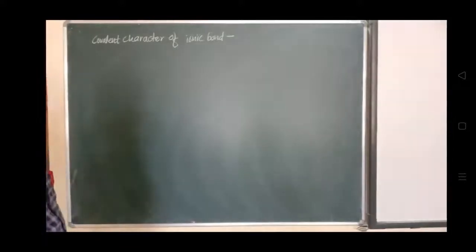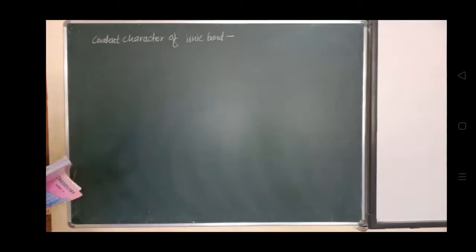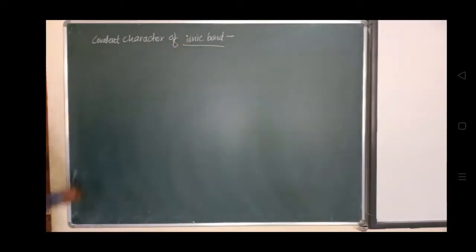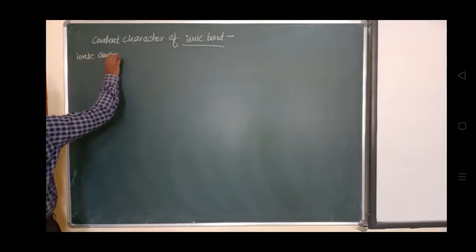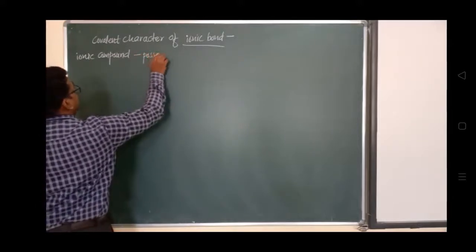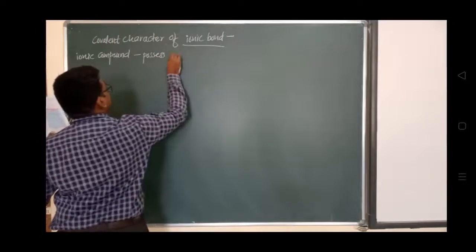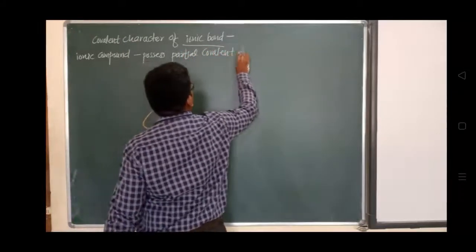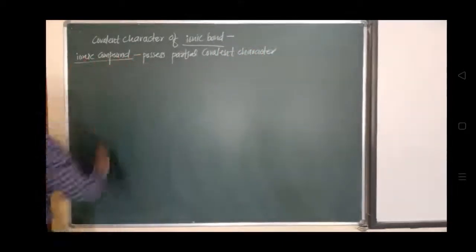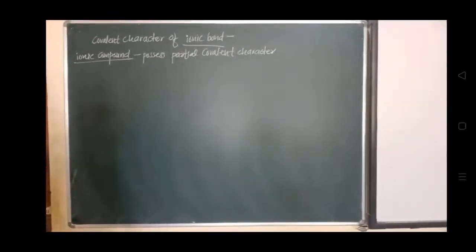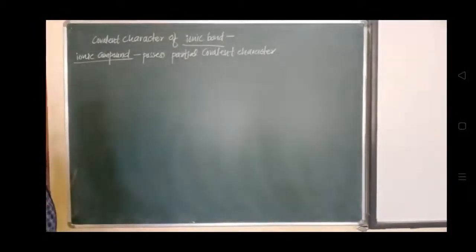Today we will discuss the covalent character of ionic bonds. We know that some ionic compounds possess partial covalent character. For example, NaCl is an ionic compound because it gives Na⁺ and Cl⁻, but it also possesses some partial covalent character.